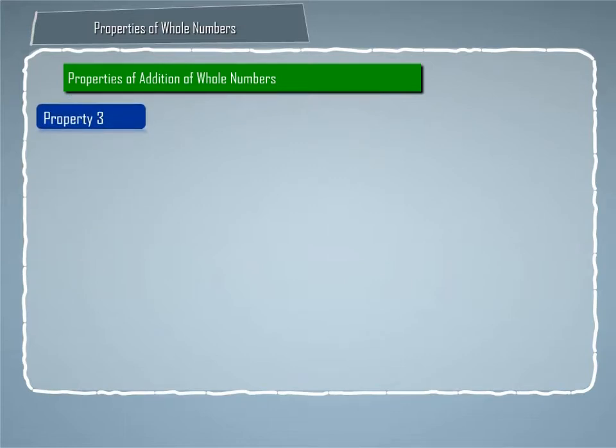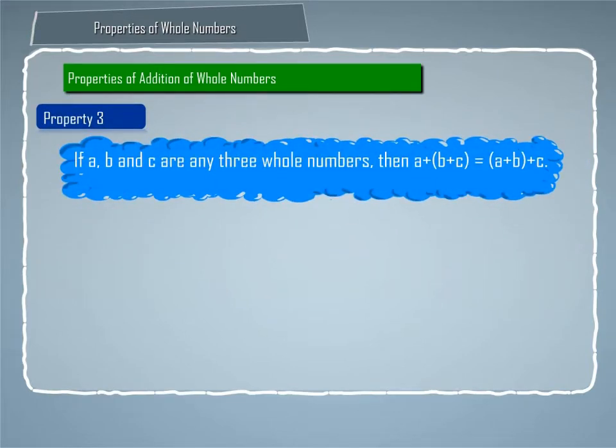Property 3: If A, B and C are any three whole numbers, then A plus B plus C is equal to A plus B plus C. This property is known as associative property of addition of whole numbers.